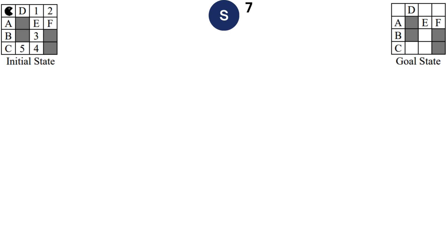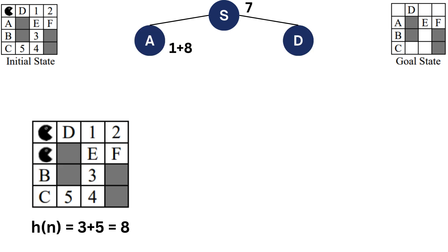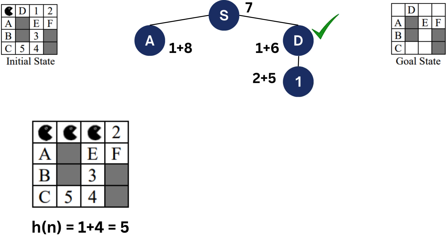Starting the algorithm from the initial state with heuristic value 7, Pac-Man can move to state A or state D. Moving to state A gives heuristic value 3 plus 5 equals 8, where 3 is the minimum Manhattan distance to all food dots and 5 is the remaining dot count. Moving to state D gives heuristic value 1 plus 5 equals 6. A* chooses the node with least f-cost, which is D at 7. From D, the only option is to move to the cell with food item 1, giving heuristic value 5 and step cost 2, total cost 7.